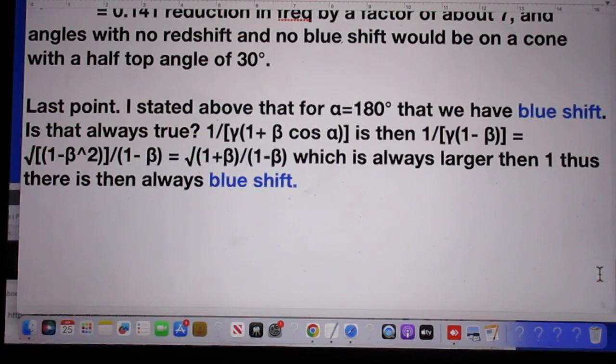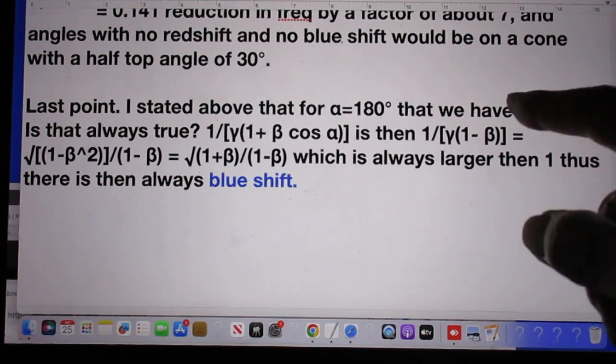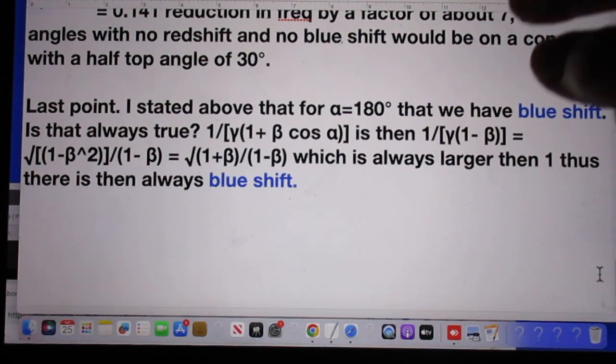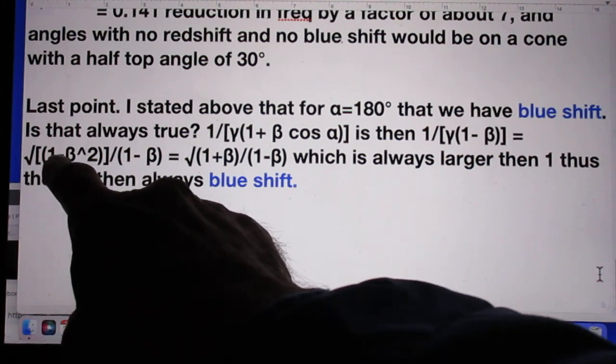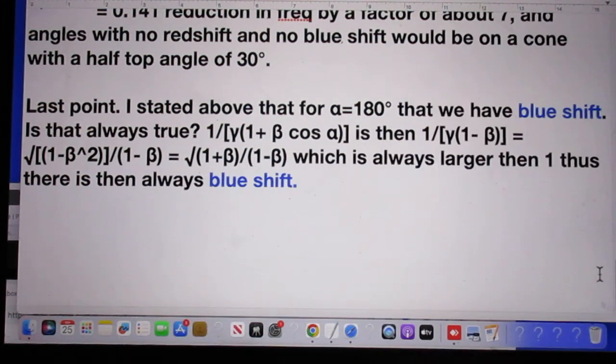If alpha is 180 degrees, then the cosine alpha is minus 1. So the ratio frequency received divided by frequency emitted is then 1 divided by gamma times 1 minus beta. Now gamma is the square root of 1 minus beta squared. So 1 over gamma is the square root of 1 minus beta squared. And I have to divide that by 1 minus beta. And so you very simply get the answer that if alpha is 180 degrees, that the ratio frequency received divided by frequency emitted is the square root of 1 plus beta divided by 1 minus beta.